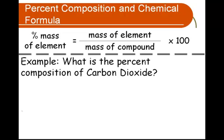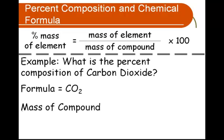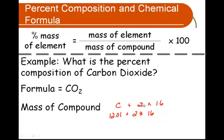What's the percent composition of carbon dioxide? In order to do this, we're going to need to know the formula of carbon dioxide. The total mass of the compound is equal to the mass of carbon plus 2 times the mass of oxygen. The mass of carbon is 12.01 and the mass of oxygen is 16. So we take 12.01 plus 2 times 16 and get a total mass of 44.01.